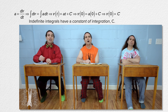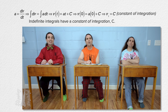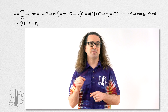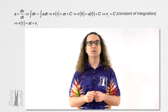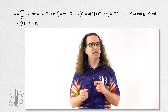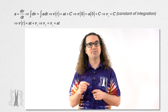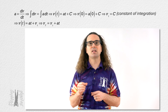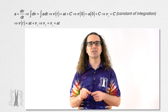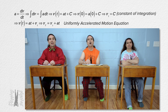That means the constant of integration equals the initial velocity of the function. In other words, the velocity as a function of time equals acceleration times time plus velocity initial. And we can rearrange that to get velocity final equals velocity initial plus acceleration times time. That is one of our uniformly accelerated motion equations.